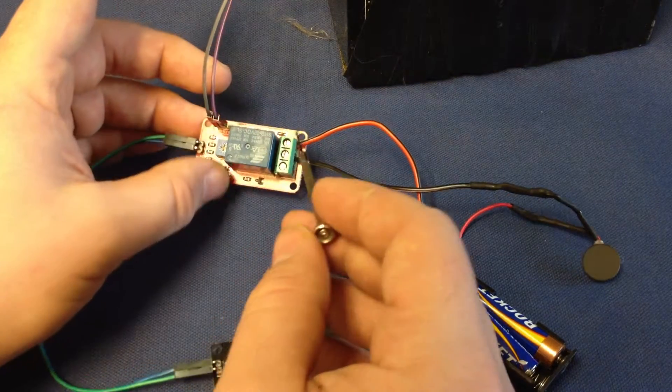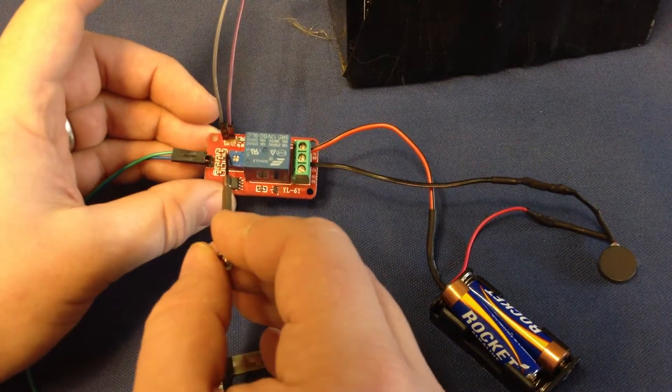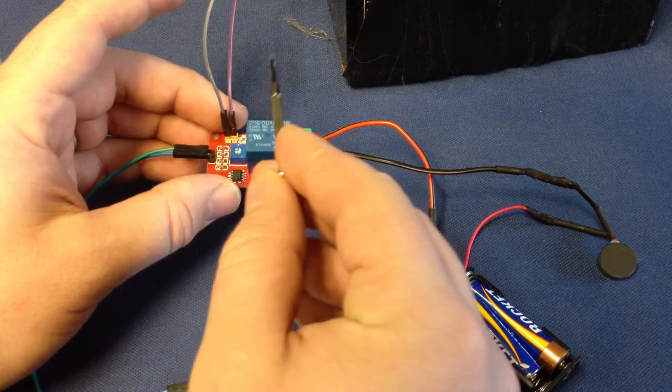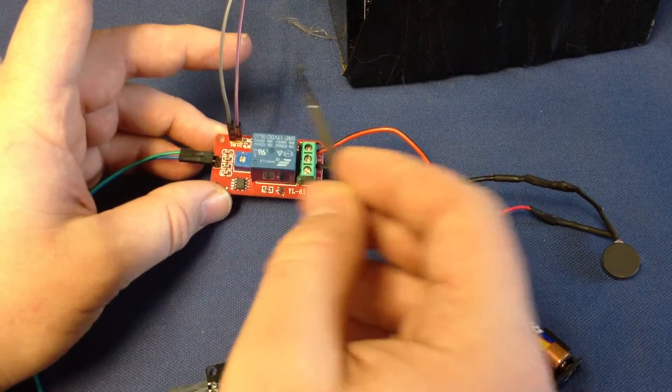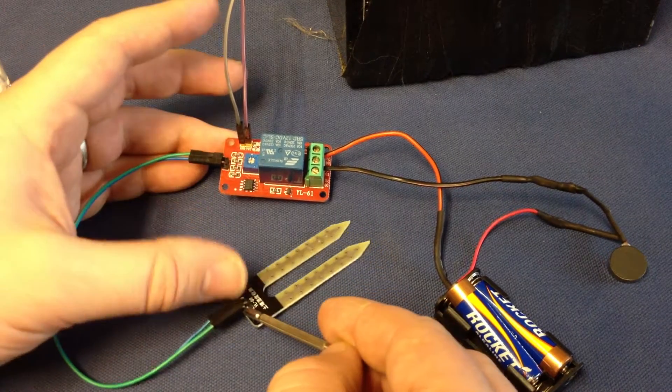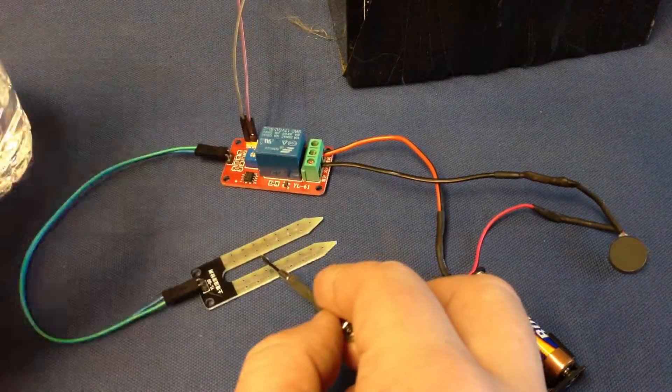So on this side you have ground and then it says VCC. Ground is obviously black and then the other one is positive or red. This part right here is just the two wires coming out to the moisture sensor.